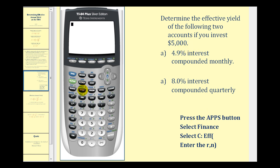So we're going to press the apps key, select the finance menu which is the first one, press enter. Now we need to find EFF located under C. I'm going to press the up arrow and notice here's the command that we want, EFF. Press enter. Now we're going to type in the actual percent as a percentage, not as a decimal. So we'll type in 4.9,